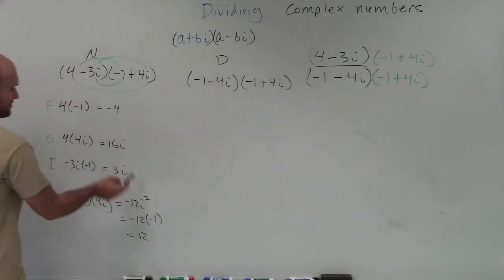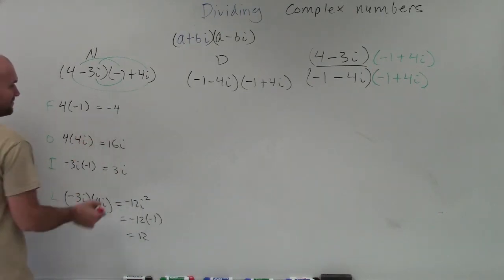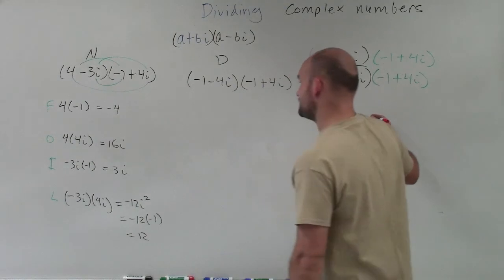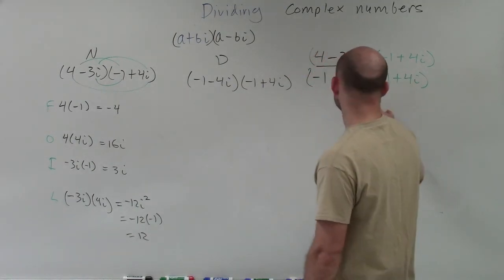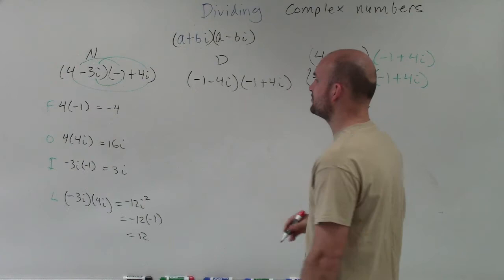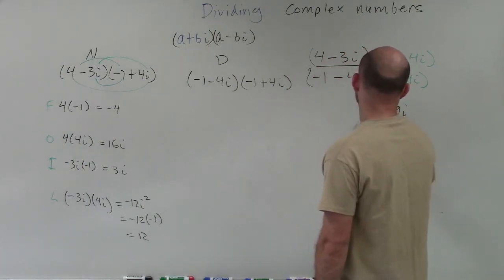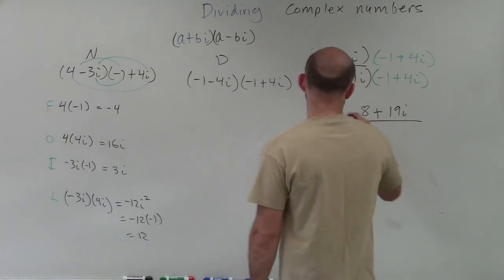I can combine a positive 12 and negative 4 to leave me with my new numerator, which is going to be. So 12 plus a negative 4 is going to be a positive 8. And then 16i plus 3i is now going to be 19i. All right, so that's my new numerator.